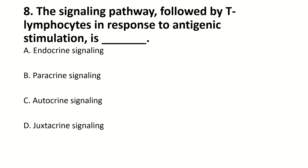The signaling pathway followed by T lymphocytes in response to antigenic stimulation is dash. Right answer is C — autocrine signaling.